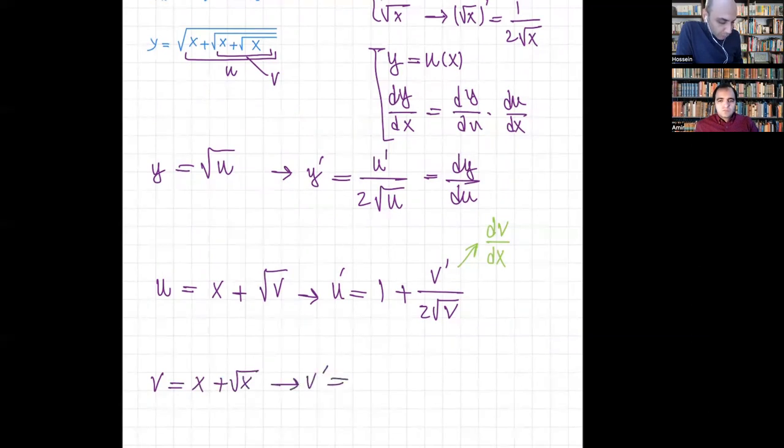That's correct. So the derivative of the first term x is equal to one. The derivative of the second term, the square root, is one over 2 times the square root of x.